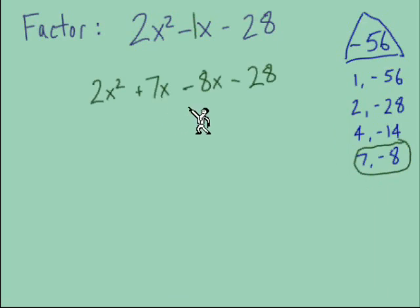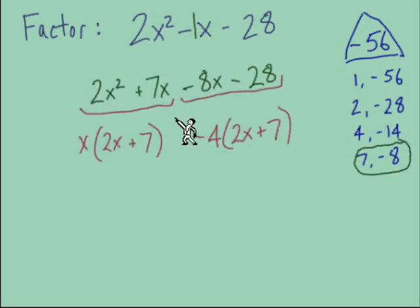Those numbers are used to create two new terms: positive 7x and negative 8x. Factoring by grouping, we find from the first pair a GCF of x in front of parentheses, with 2x + 7 inside.